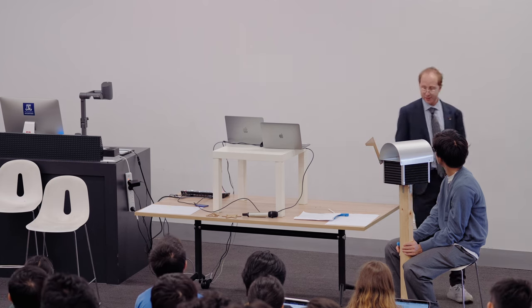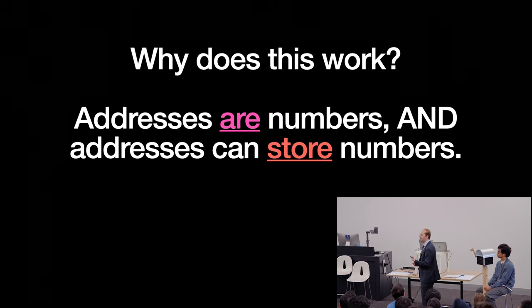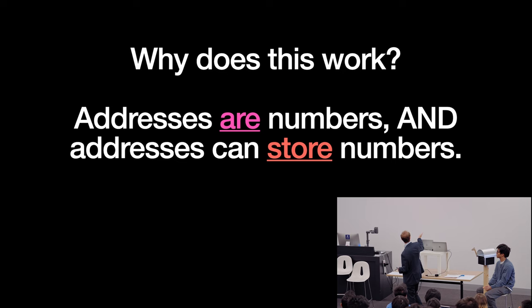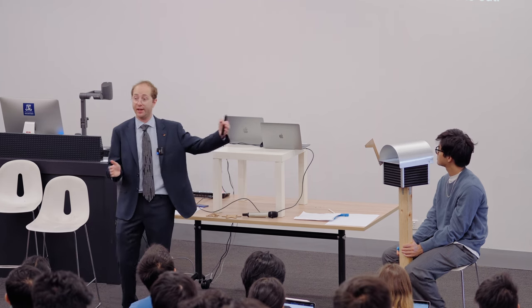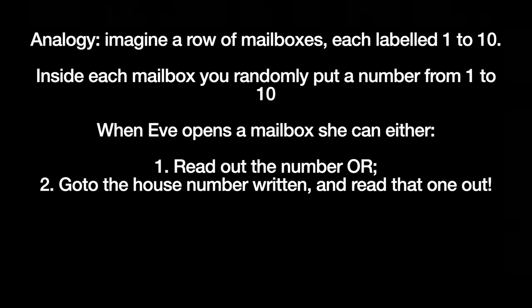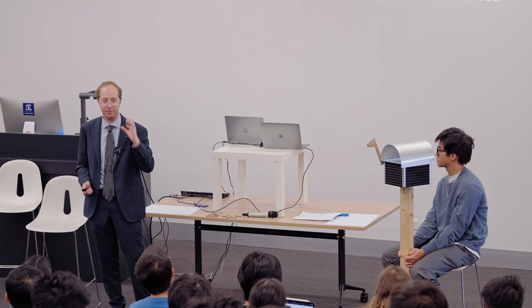So why does this work? Essentially because everything inside the computer is a number. Letters are numbers, addresses are numbers, numbers are numbers — they're all just bits and electrical and magnetic impulses at the end of the day. Because addresses are numbers and addresses can store numbers, we can use the numbers we store as if they were addresses. Think of a whole row of mailboxes — every mailbox has its address, but it can also store a number inside it — like the address of another mailbox on the row. This is the whole idea behind pointers.